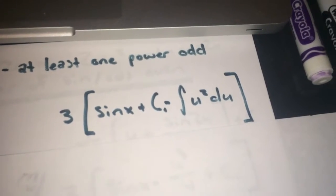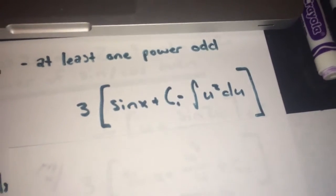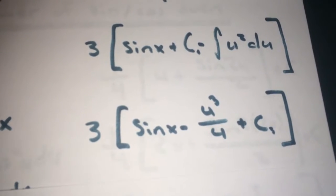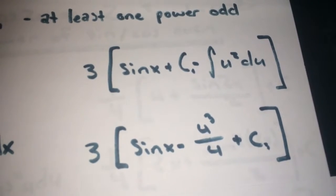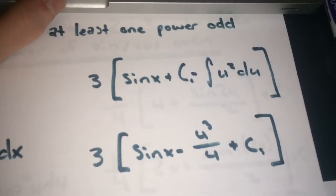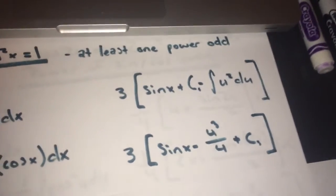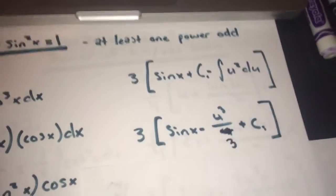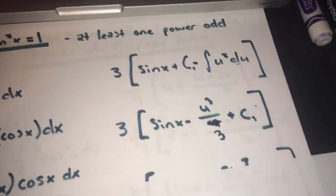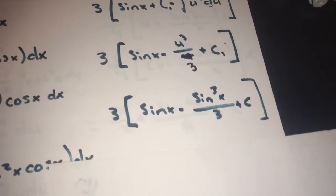We're going to have 3 times sine x plus c1, minus the integral of u squared du. The constants c1 and c2 combine into c3. So you get 3 times the quantity sine x minus u cubed over 3, plus c. Plugging u back in, the final answer is 3 times sine x minus sine cubed x over 3, plus c.